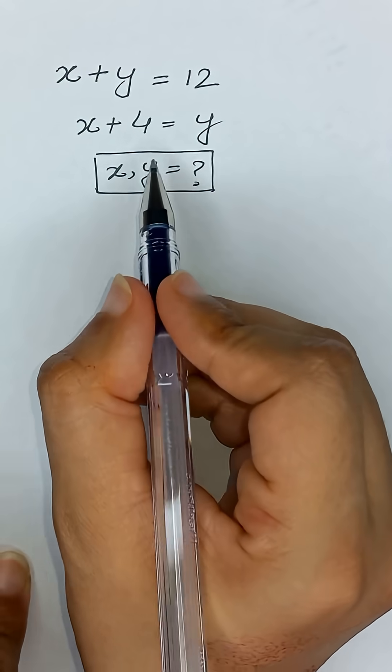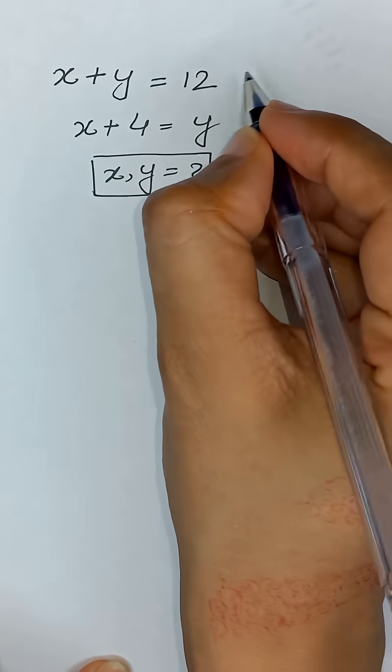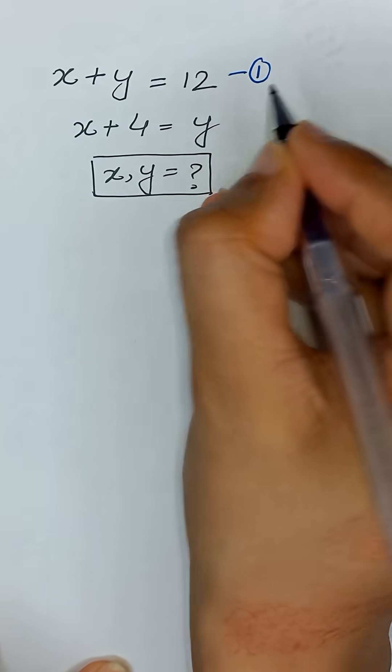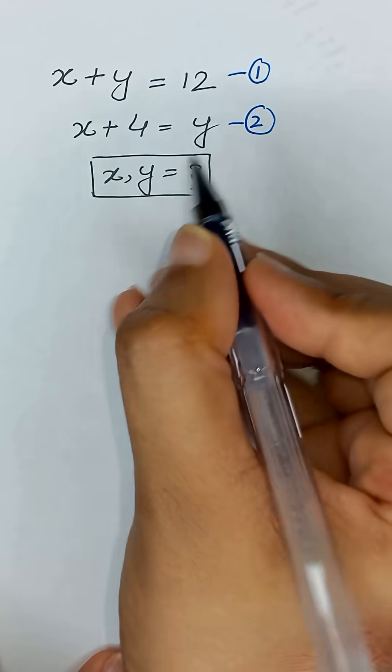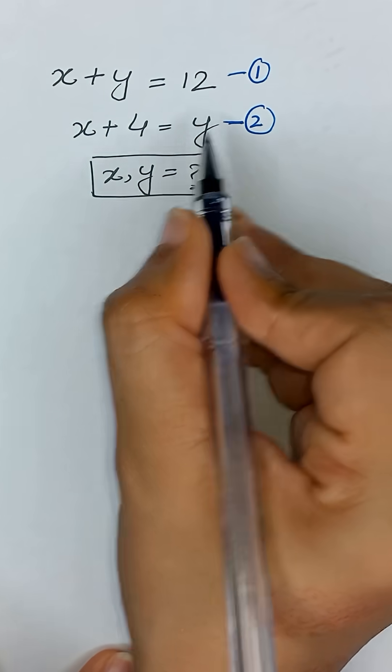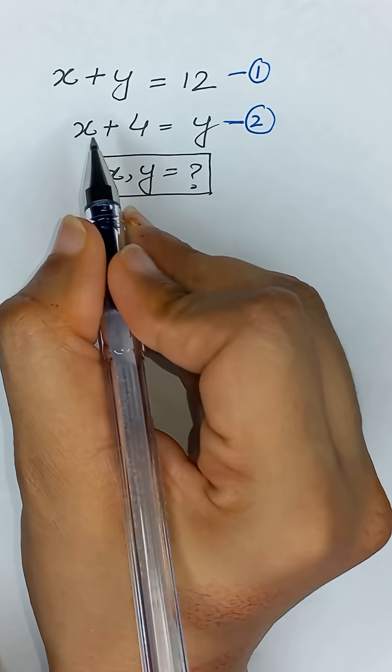x plus y is equal to 12 and x plus 4 is equal to y. Here we have the first equation and here we have the second equation, and we will solve for x and y. In the second equation, we have the value of y, x plus 4, in terms of x.